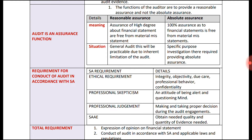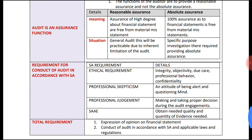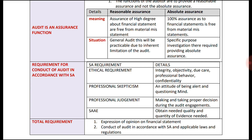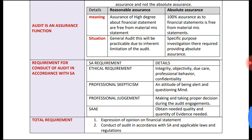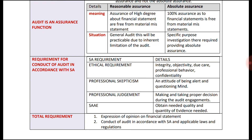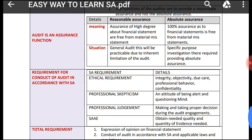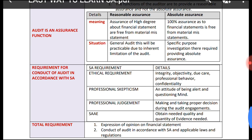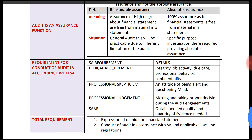In general audit practice, only reasonable assurance can be provided due to the inherent limitations of the audit. For specific purposes such as investigations — for example, fraud investigations or investigations into the affairs of a company — absolute assurance is required. So, normal statutory audit gives reasonable assurance, while absolute assurance is for specific-purpose investigations.